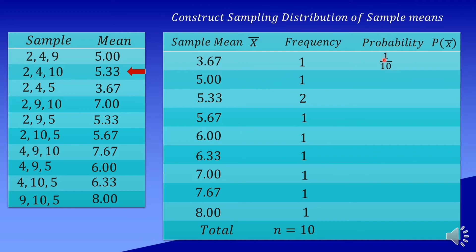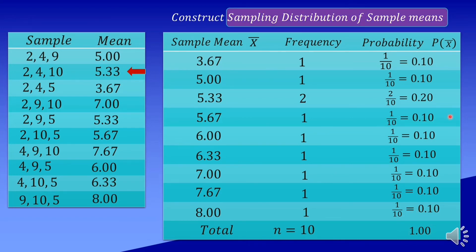For our probability, since 3.67 has 1 frequency out of 10, the probability is 1 over 10 or 0.10. Same way, 5.0 has 1 frequency. 5.33 has 2 frequency, 2 out of 10, that is 0.20. Same with the other 1 frequency values. Add all the probabilities to get 1.00. This is how we construct the sampling distribution of sample means.